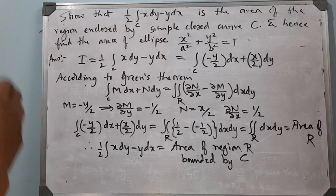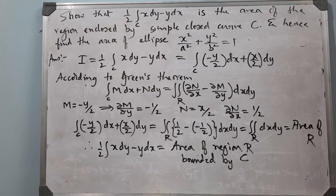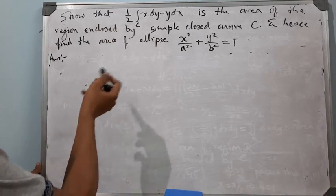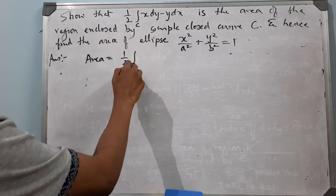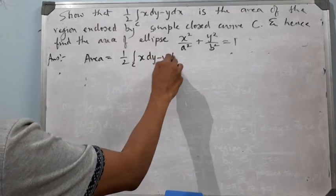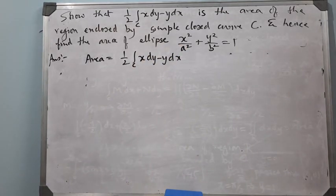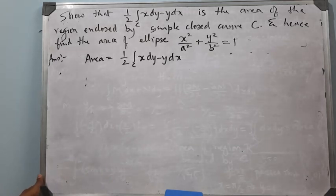We have proved that (1/2) ∮_C (x dy − y dx) represents the area of the region enclosed by curve C. To evaluate the area of the ellipse using this line integral, we convert it to a single-variable integral using the parametric form, since we have a closed curve.